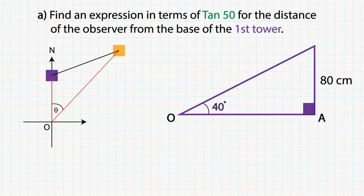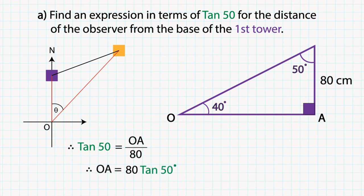So, using both diagrams, since the angle of elevation from the observer to the first tower is 40 degrees, the size of the angle between the line of sight and the tower should be 50 degrees as the sum of the internal angles of a triangle is 180 degrees. Therefore, tan50 is equal to OA over 80, which makes OA equals to 80 tan50.